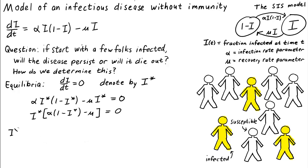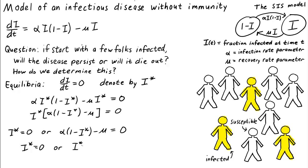To solve this equation, we can factor out an i*. So we can see that the solutions are i* equals zero — the first factor could be zero — or the second factor could be zero: alpha times (1 minus i*) minus mu equals zero. Solving that second equation for i*, we determine that the equilibria are i* equals zero and i* equals 1 minus mu over alpha.